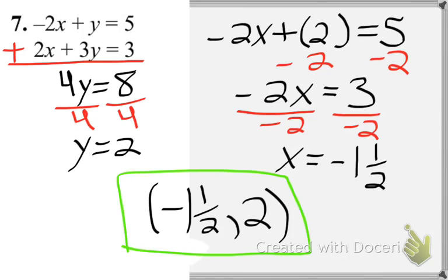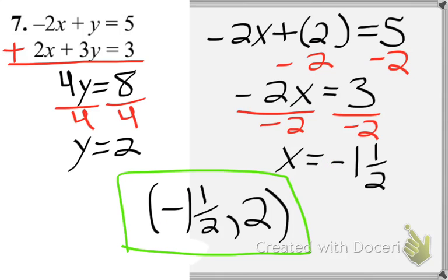On question 7, again it was mostly negatives that tripped students up — losing track of them and making small mistakes. Write negatives big and proud so you can see them clearly. Don't squeeze the negative sign close to the equal sign where it might get missed when writing your final answer. Being neat and organized prevents those errors.